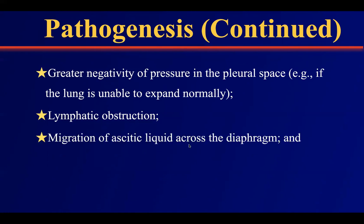Lymphatic obstruction is another reason for pleural effusion. It occurs usually due to infection of the lung, such as non-specific infection or tuberculosis. It also occurs during lymphatic obstruction caused by malignancy — for example, during lung cancer — or in patients with inflammatory diseases such as rheumatoid arthritis or Behcet's disease.